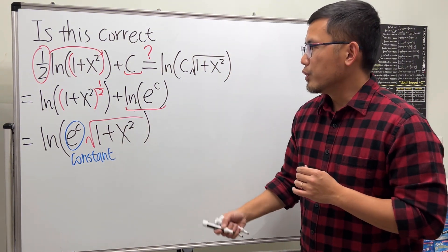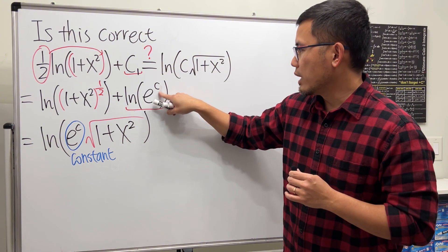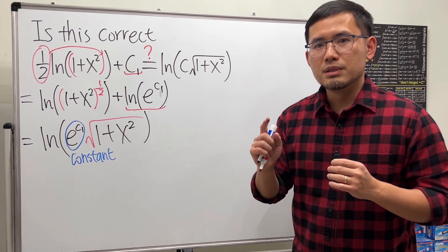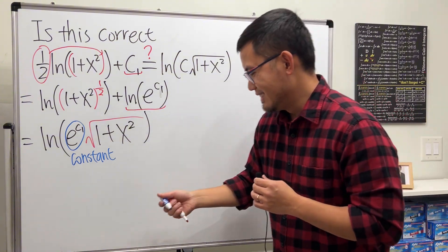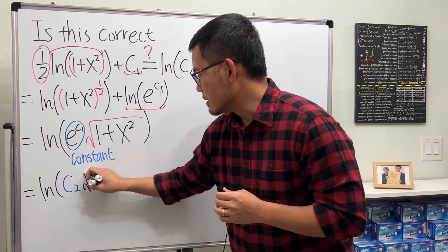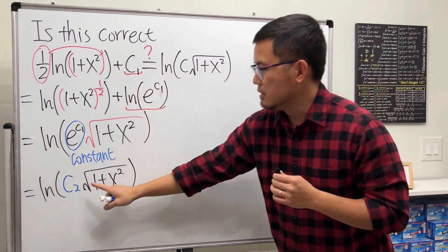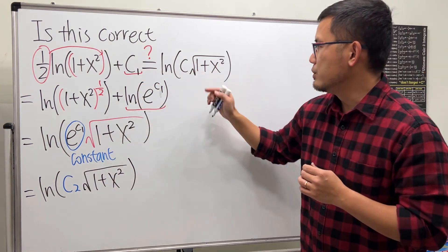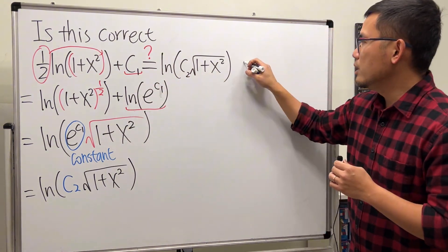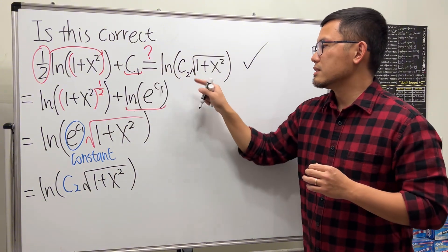So if you want to keep things clear, you could have done this: this right here being c1, and then over there still c1. But e to the c, let's just call that another constant, c2. All right, so this can give us ln of c2 times the square root of 1 plus x squared. And as you can see the structure, this is the c1 from here, but this is the c2. So if you say c1 and c2 like this, this is totally okay. It's true if you're talking about two different constants.